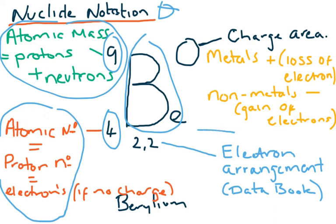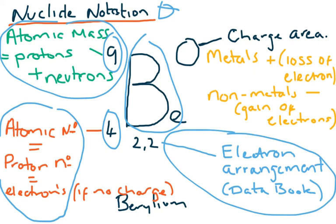The electron arrangement can be found in the data book and gives the positions of the electrons: two in the first shell maximum, eight in the second, third, and fourth. In the top right-hand corner you may have a charge given. This indicates whether an atom has lost an electron — metals lose electrons, so it would be a positive charge, meaning more protons than electrons — or a negative charge, as non-metals gain electrons, so there would be more electrons than protons.